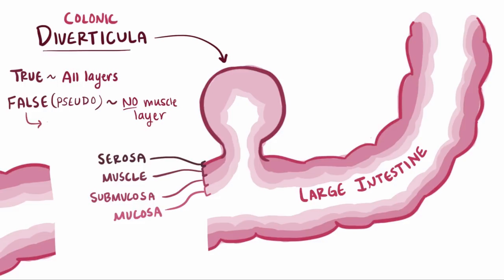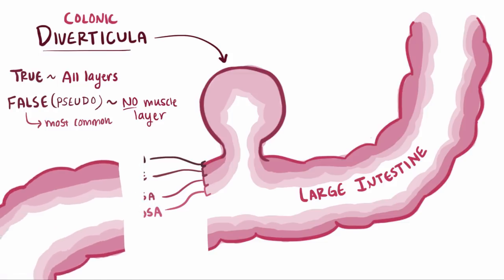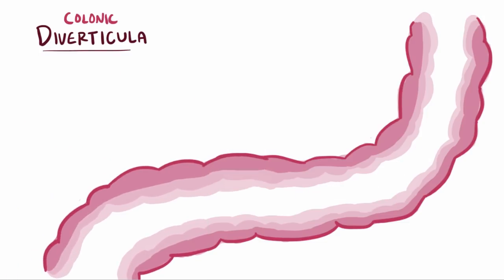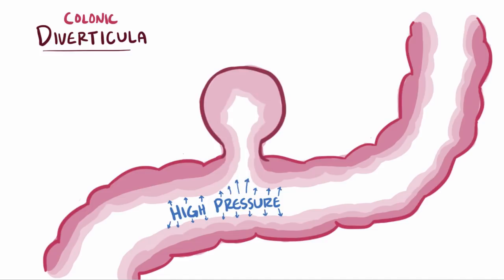Most of the time, diverticula in the large intestine are false diverticula. It's thought that the formation of colonic diverticula is a result of high pressures that literally push on the walls such that they bubble out and form these pouches.